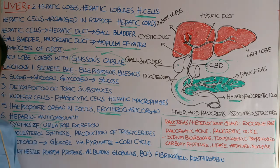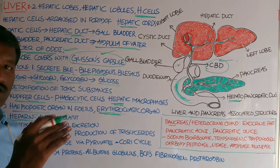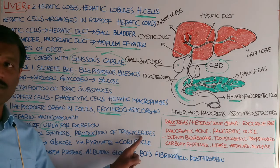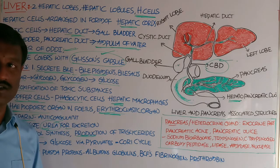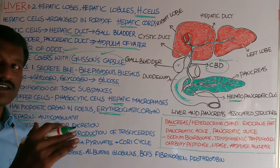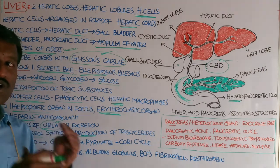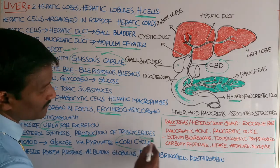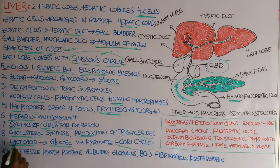The liver also synthesizes cholesterol, which helps in the formation of different types of hormones and vitamin D. The liver also produces triglycerides, a type of lipid. Lactic acid produced by anaerobic muscle contractions is transported to the liver via blood circulation, where it is converted back into glucose via pyruvate. This process is called the Cori cycle.